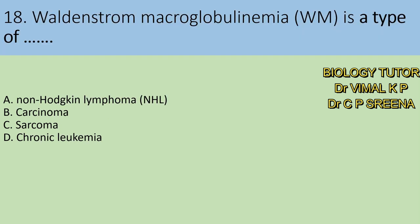Eighteenth question: Waldenstrom macroglobulinemia or WM is a type of — A. Non-Hodgkin lymphoma, B. Carcinoma, C. Sarcoma, D. Chronic leukemia. Here answer is A — NHL, or non-Hodgkin lymphoma.